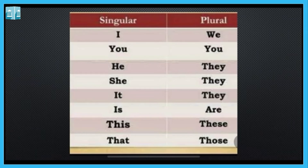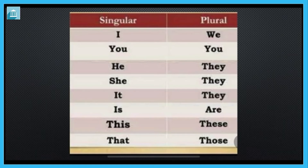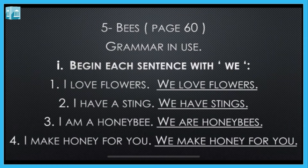So if you are alone, use 'I'. If you have to refer to more students along with yourself, use 'We'. Similarly, you have to replace 'I' with 'We' here. The first is 'I love flowers' → 'We love flowers'. Second: 'I have a sting' → 'We have stings'. Third: 'I am a honey bee' → 'We are honeybees'.